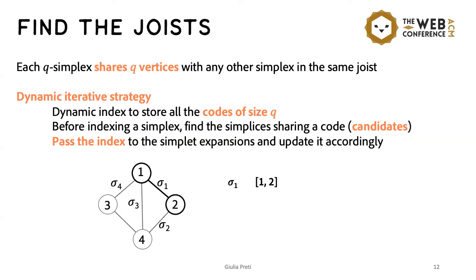So for example, if we are adding sigma 1 in this simplet, we find that there are three other simplices that share a code with it, but not all of them form a joist with sigma 1. In fact, only sigma 2 and sigma 3 form the joist of this triangle.